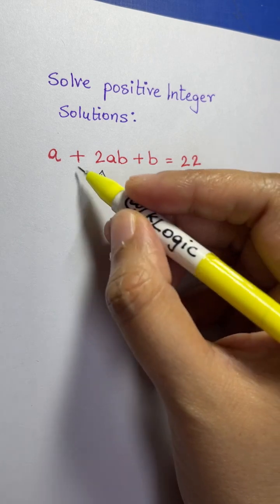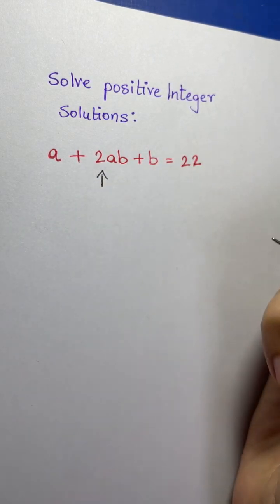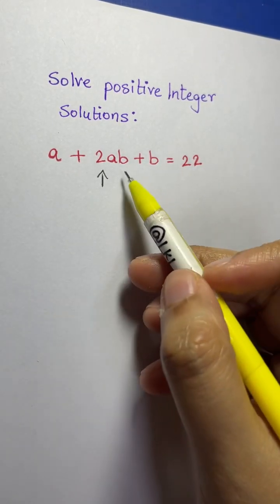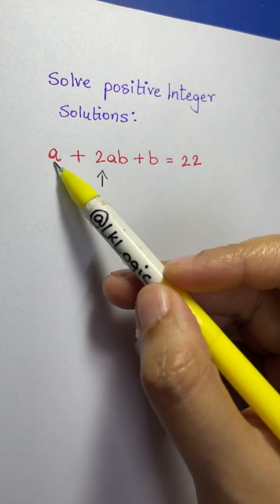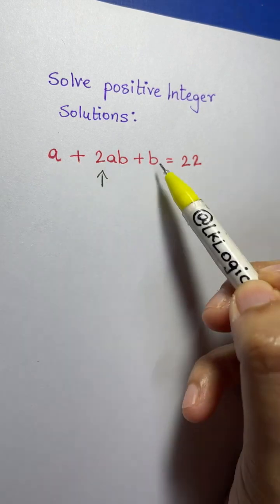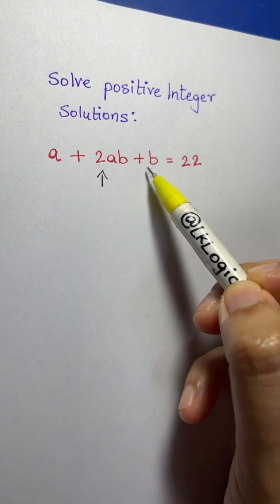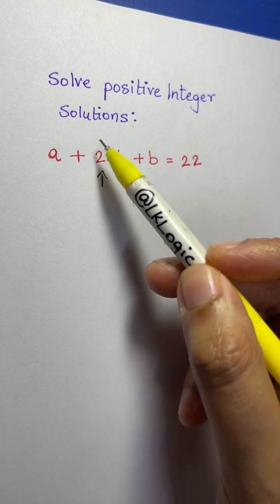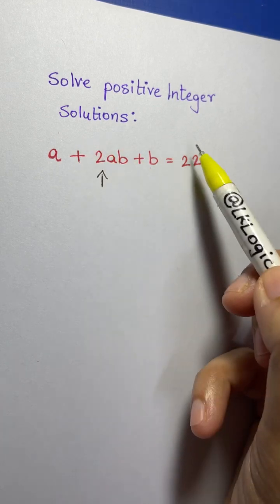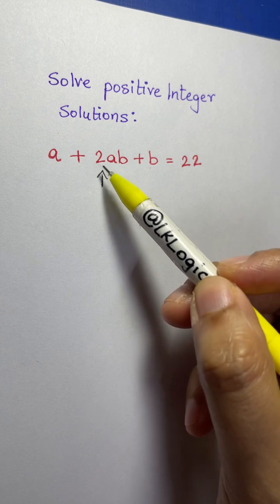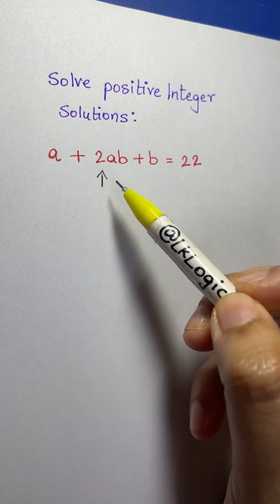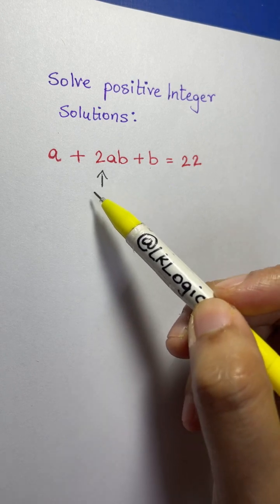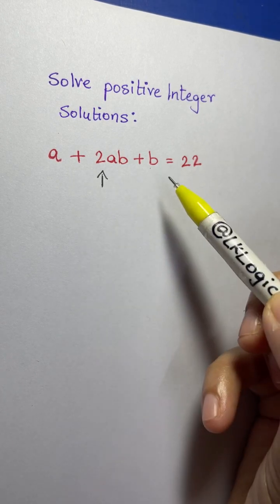This 2ab term looks a bit ugly and isn't suitable for easy factoring. You have a and b each with coefficient 1, but if you multiply those coefficients — 1 times 1 — you get 1, not 2. So this looks a bit weird. How do we get rid of this 2? Let's try to factorize it, but before factorizing we need to take some steps.